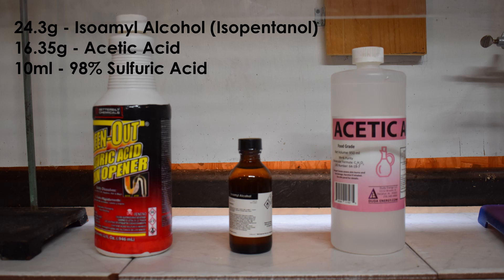To make this compound, I used 24.3 grams of isoamyl alcohol, 16.35 grams of glacial acetic acid, and to catalyze the reaction, I used 10 milliliters of concentrated sulfuric acid.